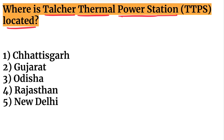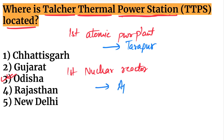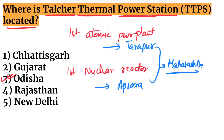Where is the Talcher Thermal Power Station located? It is located in Odisha. Additional facts: India's first atomic power plant is Tarapur, and India's first nuclear reactor is Apsara — both are in Maharashtra. The Talcher Thermal Power Station is in Odisha.